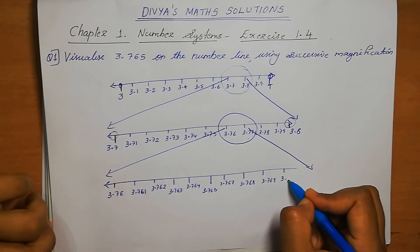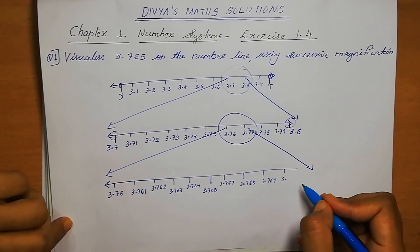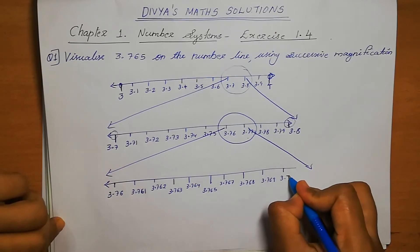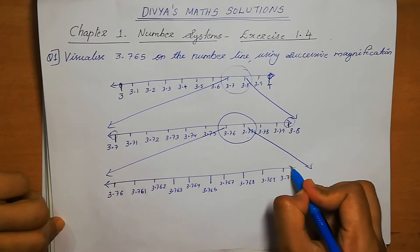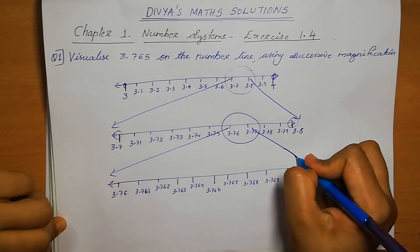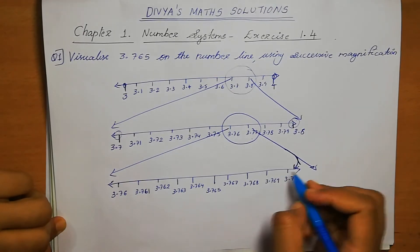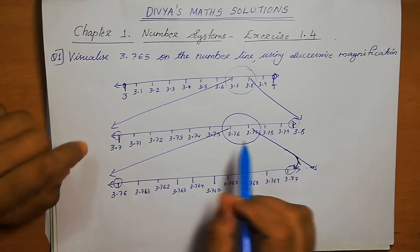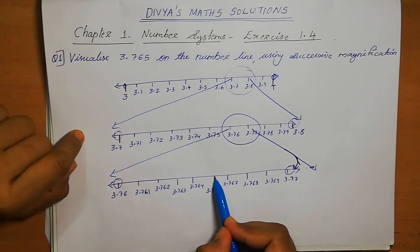Continuing: 3.766, 3.767, 3.768, 3.769 — after that comes 3.77. So we are enlarging 3.76 and 3.77, and we need the number 3.765, which we have now found.